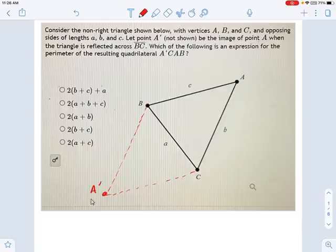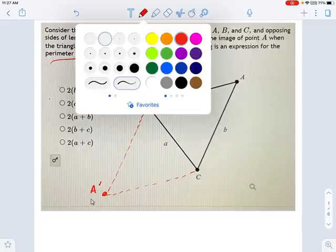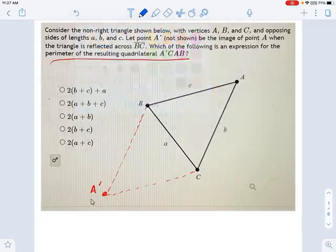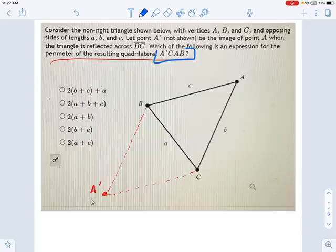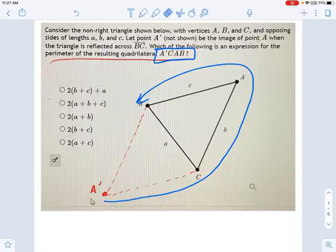And if I ask you, which of the following is an expression for the perimeter of the resulting quadrilateral? Let's think about what this quadrilateral is: A prime CAB. That means from here to here to here to here. So, the whole shape. What's the perimeter of that whole thing?